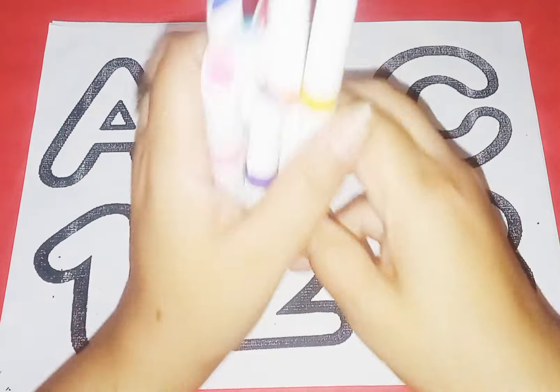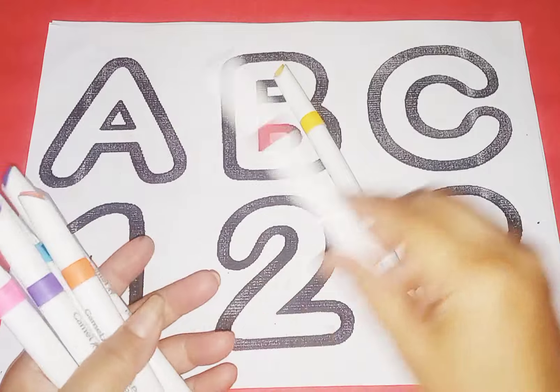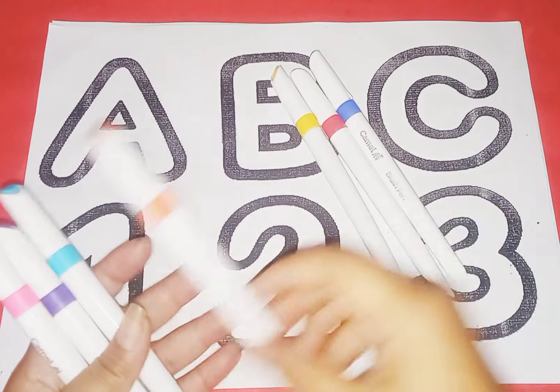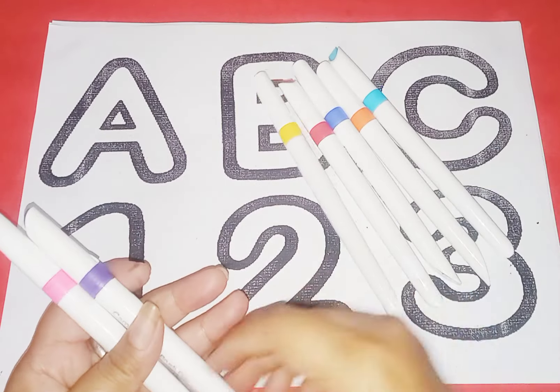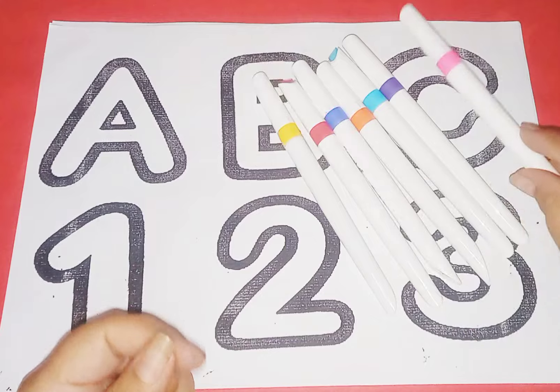These are colors: yellow color, red color, blue color, orange color, sky blue color, violet color, pink color.